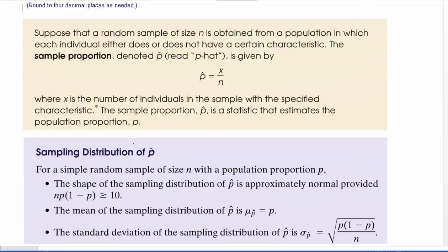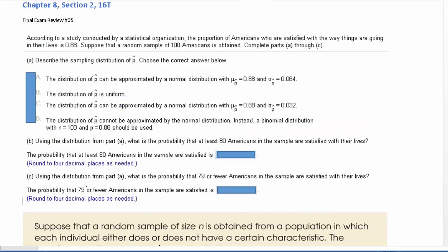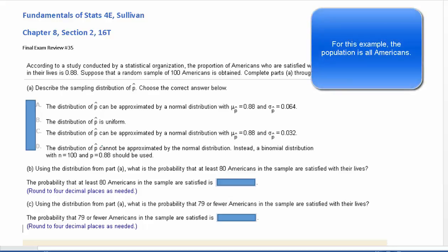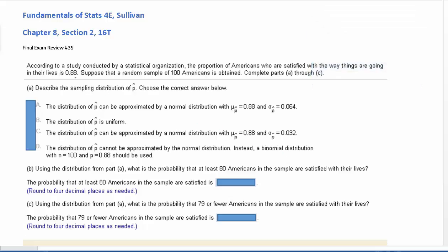For the sampling distribution, it's telling us that we can approximate it with the normal distribution if n times p times 1 minus p is greater than or equal to 10. We are talking about p-hat here, but it's talking about p here. p is the proportion of the population, so of everything. So this 0.88 is actually our p.